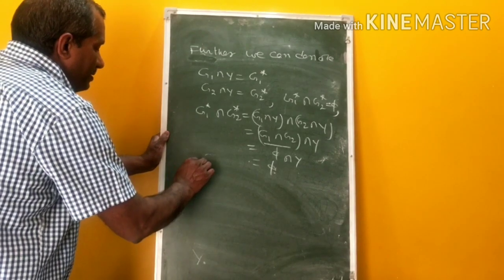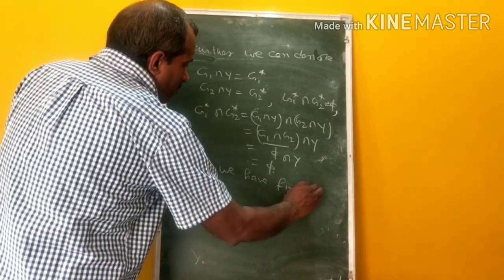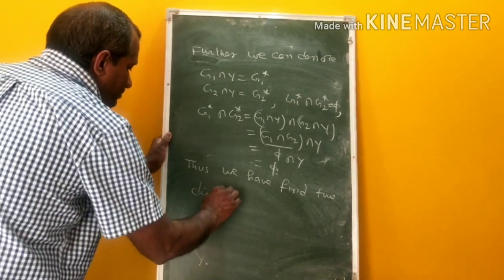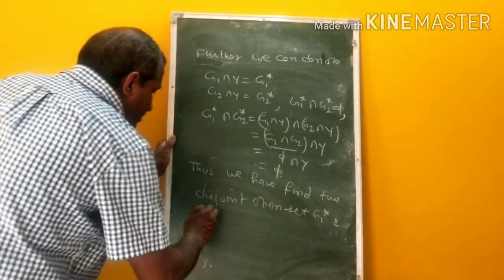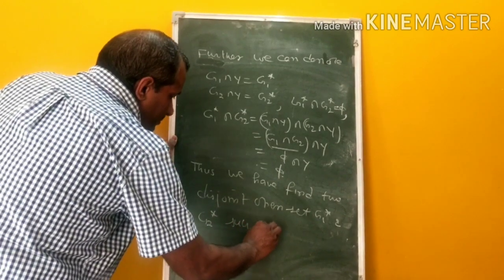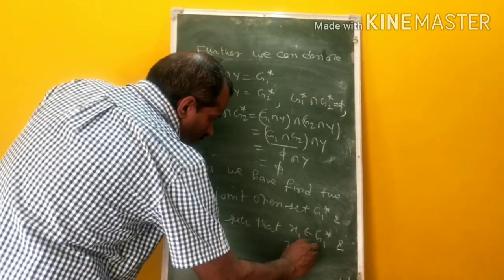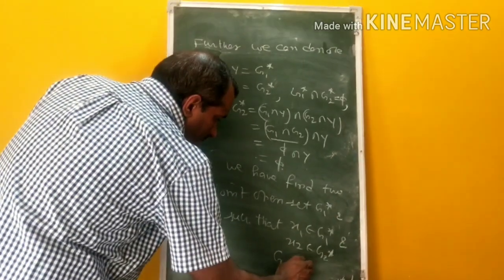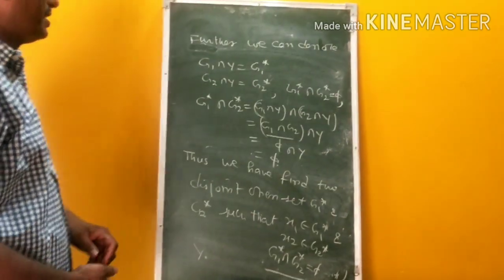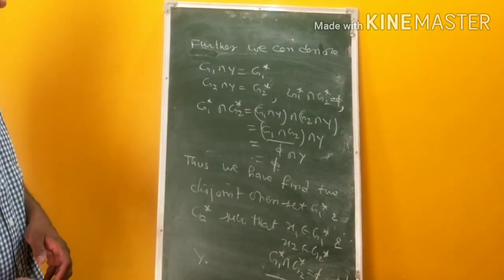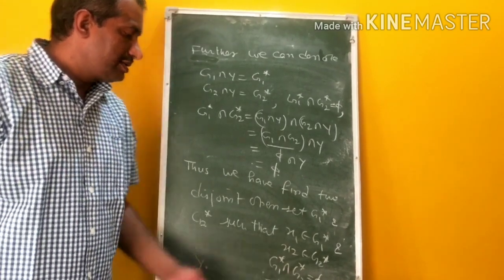Thus we have found two distinct open sets G1* and G2* such that x1 belongs to G1*, x2 belongs to G2*, and G1* intersection G2* is empty. So the heredity property holds in T2 space, because for two distinct elements x1 and x2 we found two disjoint open sets in Y satisfying the T2 condition.